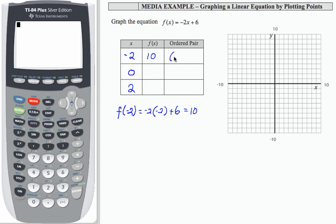So that becomes the ordered pair negative 2 comma 10. If my input is 0, f of 0 is negative 2 times 0 plus 6, that's 0 there plus 6 equals 6. So I get an ordered pair 0 comma 6.